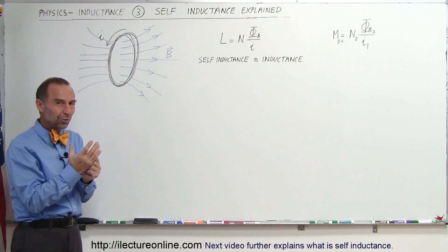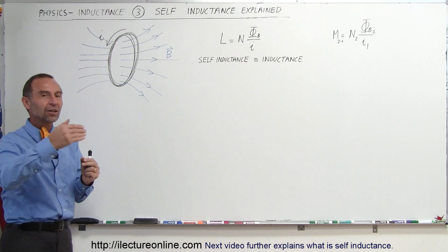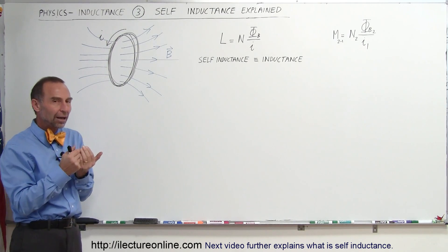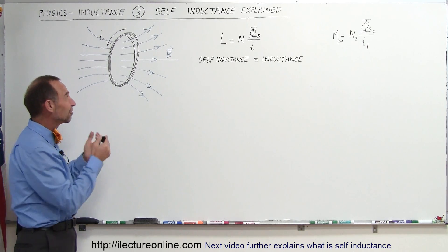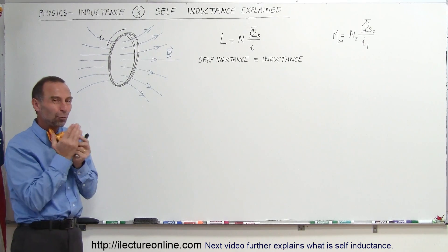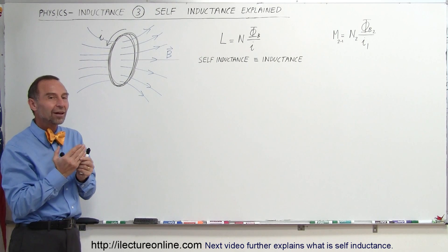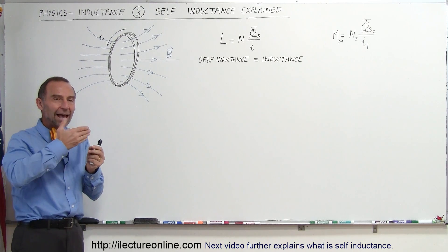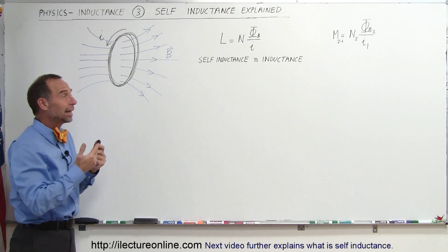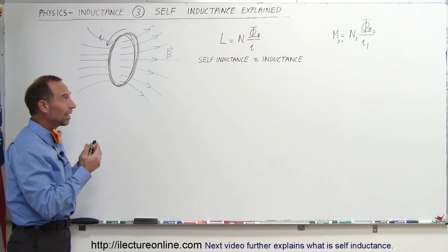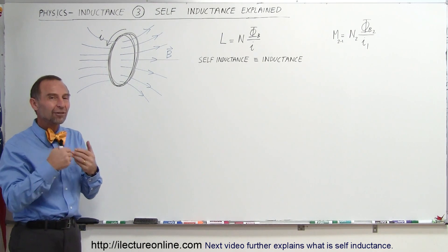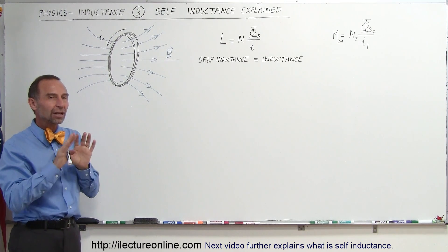The greater the mutual inductance, the greater the effect on the second coil. But it turns out that the initial coil, if we just have one coil by itself, it also has an effect on itself. And when does it have an effect on itself? When the current in itself changes.